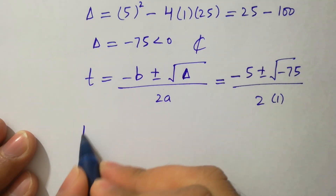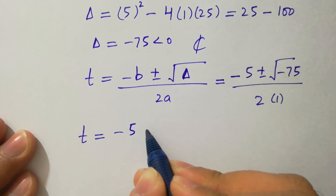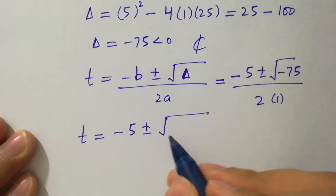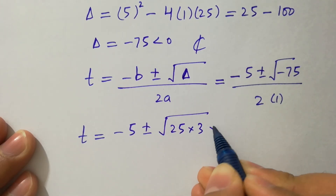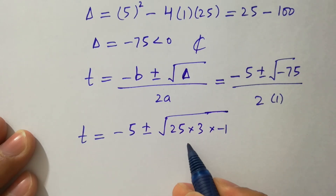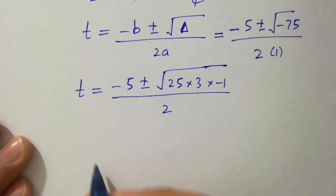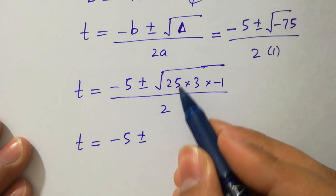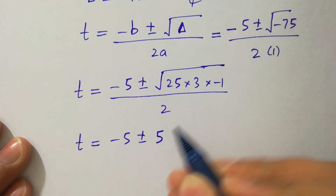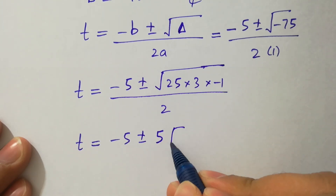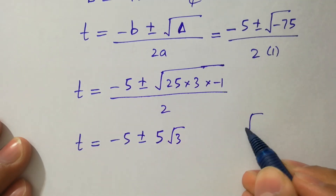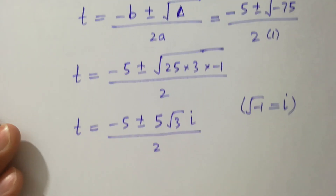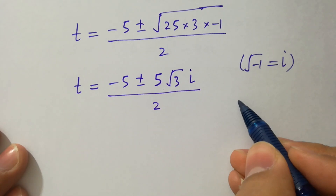Simplifying: t equals minus 5 plus or minus square root of 25 times 3 times minus 1. Since 25 times 3 is 75, over 2. So t equals minus 5 plus or minus 5 times square root of 3 times square root of minus 1, and square root of minus 1 equals i. This gives us our complex solutions over 2.